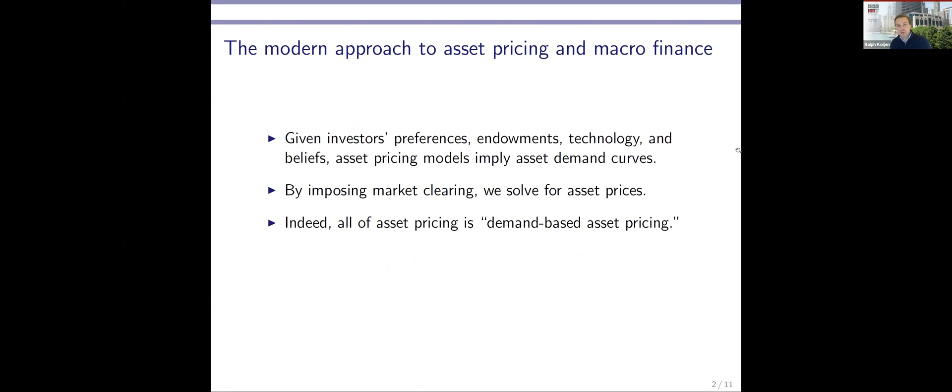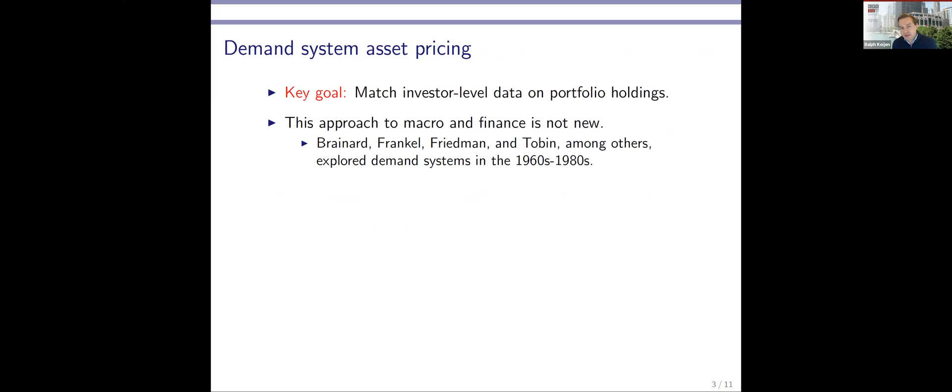Just to get started, when we think about what we typically do in asset pricing and macro finance, given investors' preferences and endowments, technology and so on, asset pricing models imply asset demand first. And then we impose market clearing and outcome asset prices. So in a way, all of asset pricing is demand-based asset pricing. Now, once we bring those models to the data though, econometric tests typically connect asset prices to state variables and their innovations to see which shocks are priced and which state variables capture fluctuations in investment opportunities.